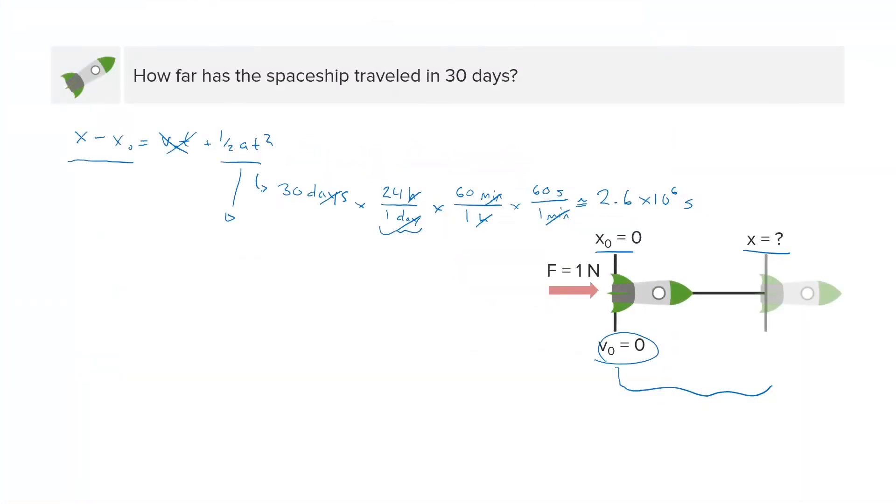The second thing we have to do is find the acceleration. Here's where we're going to need to apply Newton's second law. We know that F, the force on our object, which is one Newton, is equal to the mass of the object times its acceleration. So we can find the acceleration quite easily. We just take the force and divide by the mass.